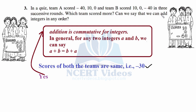Can we say we can add integers in any order? Yes, because addition is commutative for integers. If you swap minus 40 and 10, the result is the same. In general, for any two integers a and b, a plus b equals b plus a. Commutative means just changing their positions; here a was minus 40 and b was 10, and swapping them still gives the same sum.